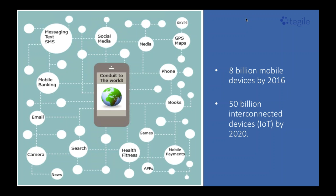There are eight billion mobile devices by 2016 — that really means a lot of people connected and providing data that needs to be processed and harnessed. There are 50 billion interconnected devices. You may have heard the term IoT, the Internet of Things — by 2020, we will have about 50 billion of those devices. So what all that really means is lots of data and lots of interesting things to look for in that data, and that's what makes this very interesting.